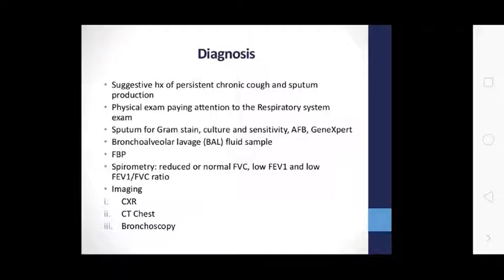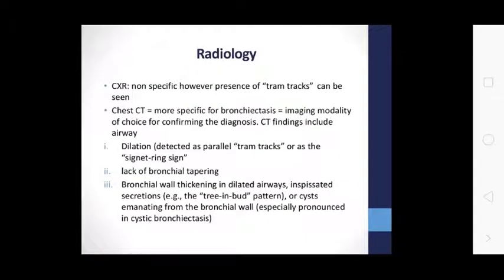Imaging includes chest X-ray and CT chest with bronchoscopy. Chest X-ray is non-specific; however, the presence of tram tracks can be seen. Chest CT is more specific and is the imaging modality of choice for confirming the diagnosis. CT findings include airway dilation detected as parallel tram tracks as well as the signet ring sign. Bronchial wall thickening in dilated airways is noted, along with the tree-in-bud pattern for cystic imaging from the bronchial wall, especially in cystic bronchiectasis.